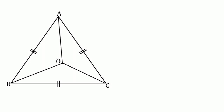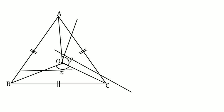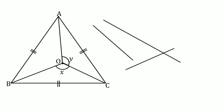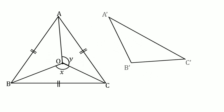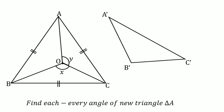Now let the angle BOC be X and angle AOC be Y. Now join these interior lines to make a new triangle A'B'C'. So our final question is that we have to find each and every angle of new triangle A'B'C'.